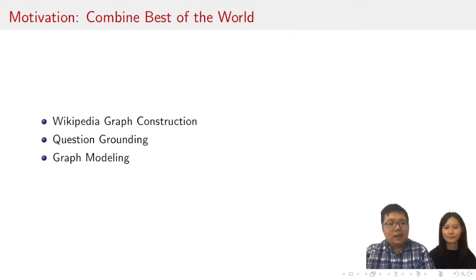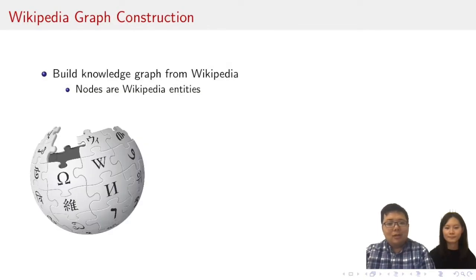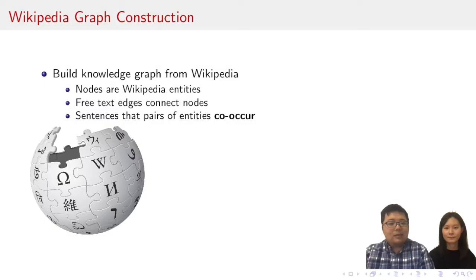For graph construction, we construct the knowledge graph similar to the traditional ones. The nodes are entities, like the page titles in Wikipedia. How about the edges? Let's see, the edges are free texts that connect two nodes. We define the edges as sentences where pairs of entities co-occur. Okay, if there is a sentence that mentions both entity A and B, then this sentence becomes an edge in our knowledge graph between node entity A and B. So, is it possible that there are multiple sentences as the edges between two nodes? Yes, this allows two entity nodes to contain different relations. Because of this, the knowledge graph that we build could have a very broad coverage.